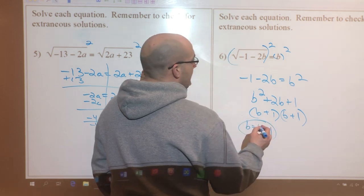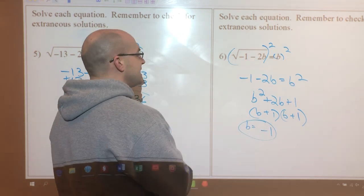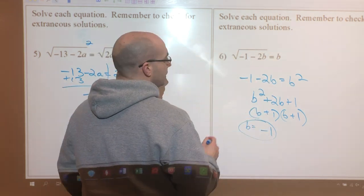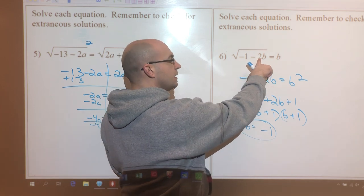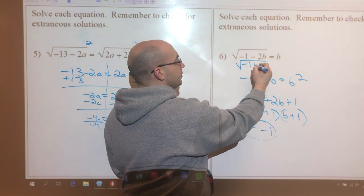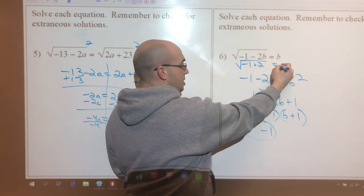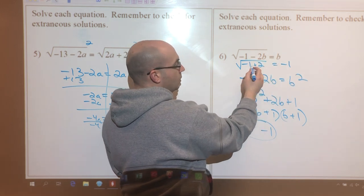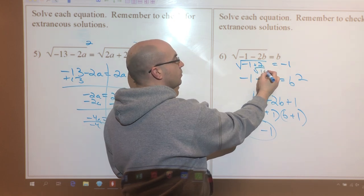Now let's go ahead and plug that back in to see if it's gonna work. So when I plug negative 1 in here, negative 2 times negative 1 is 2, so I'll have the square root of negative 1 plus 2 equals negative 1. Well, negative 1 plus 2 is 1, so the square root of 1 is 1 equals negative 1.